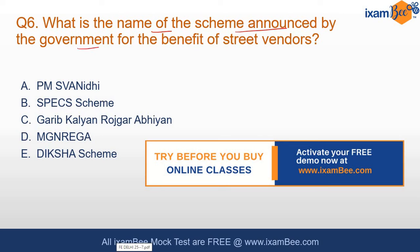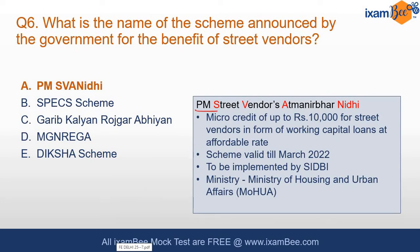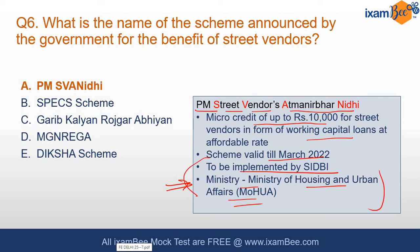The sixth question: what is the name of the scheme announced by the government for street vendors? The answer is PM SVANidhi (PM Street Vendors AtmaNirbhar Nidhi). Under this scheme, micro credit up to ₹10,000 is given to street vendors — thela-walas, sabzi-walas, chaat-walas. It is a working capital loan scheme valid till March 2022, implemented by SIDBI under the Ministry of Housing and Urban Affairs — not the Finance Ministry, which is a common mistake.